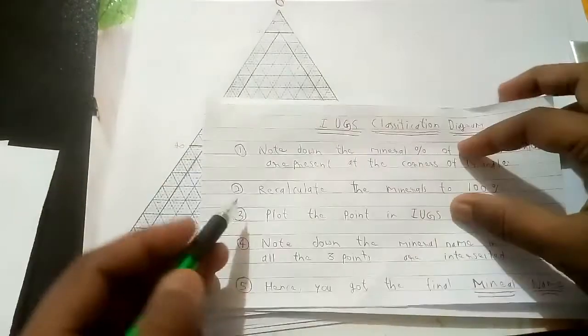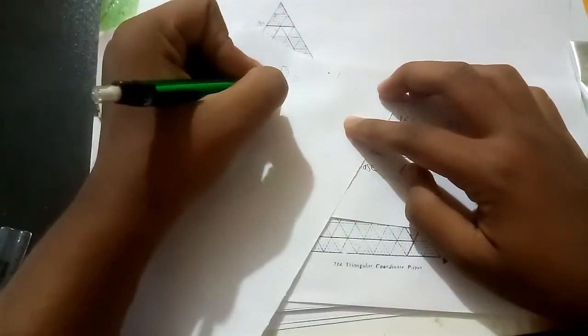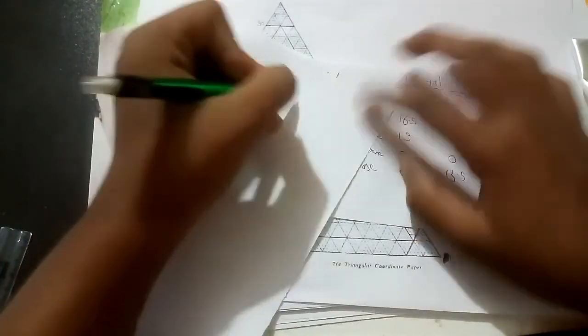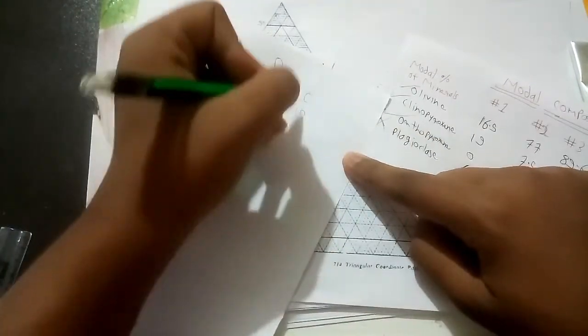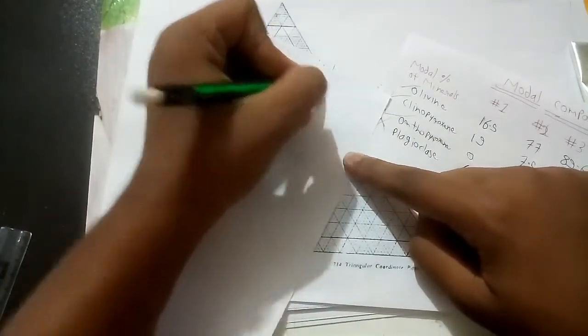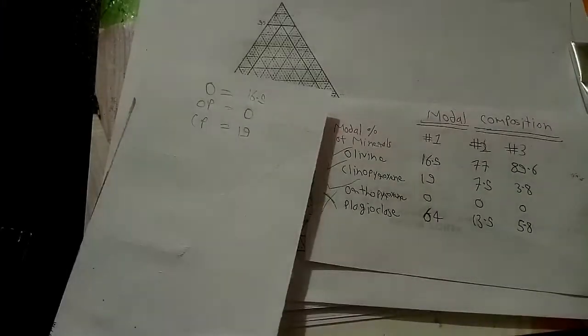Now the next step is to note down it. So OP and CP. OP is 0, CP is 19 and it is 16.5. I have noted down the values.